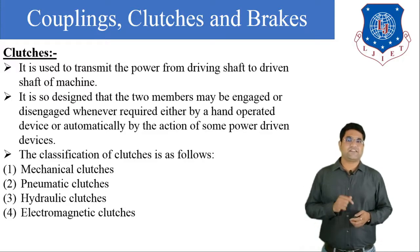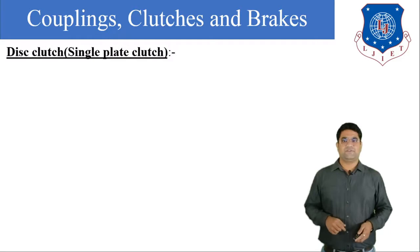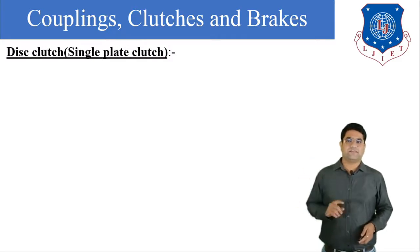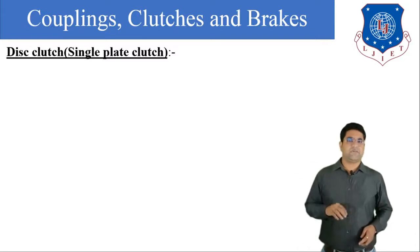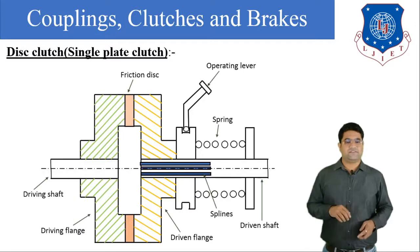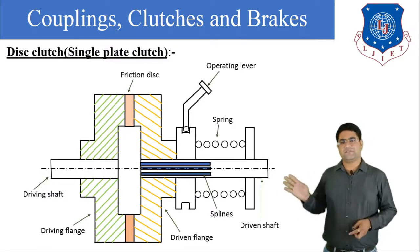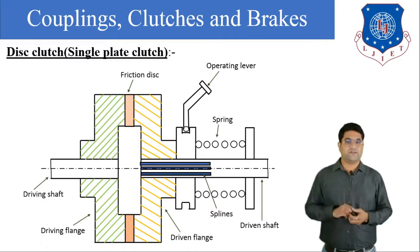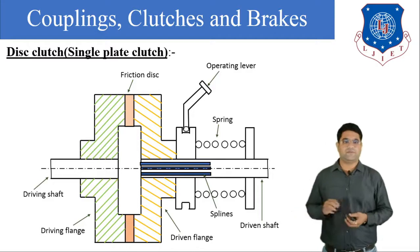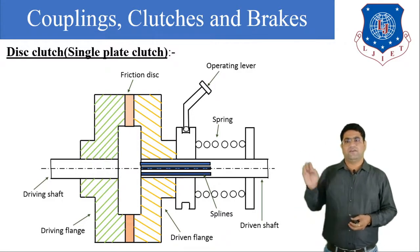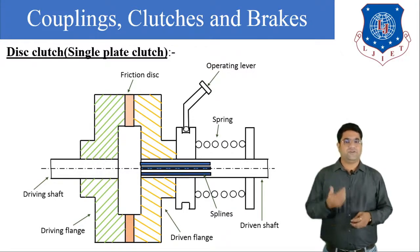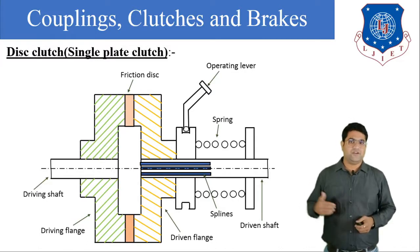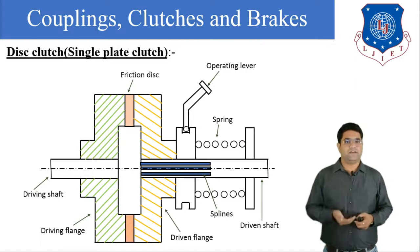Let us start with our first type of clutch, that is the disc clutch. Sometimes the disc clutch is also known as the plate clutch, and it can be single plate or multi plate. Generally, in two-wheelers we use this type of clutch. Here you can see the figure — there are various components available. First is the driving shaft, which is directly engaged with the engine, and it will rotate when the flywheel rotates. The engine gives power to the driving shaft.